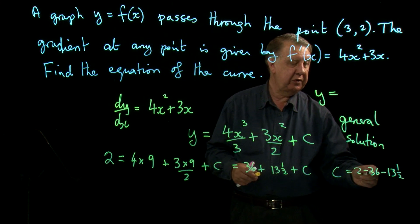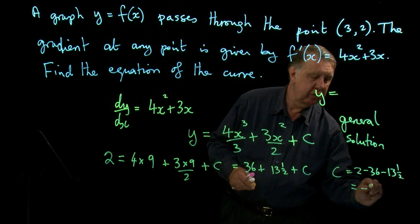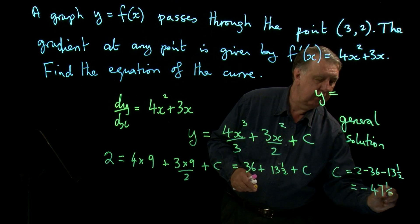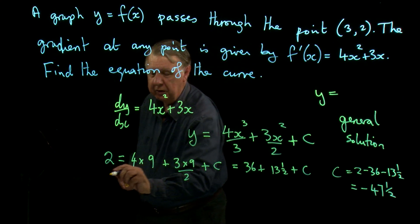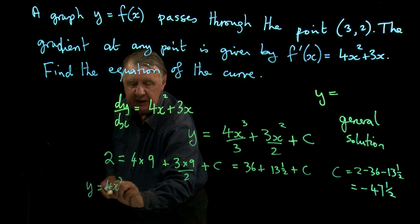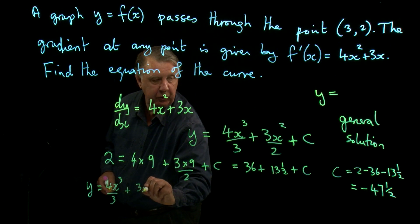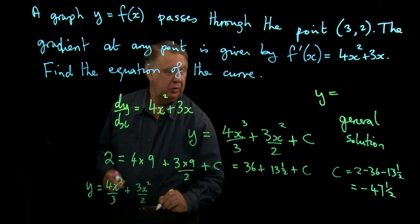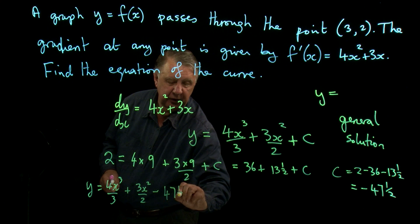So 2 take away 49 and a half is minus 47 and a half. So my final answer then is y equals 4x³/3 plus 3x²/2 minus 47 and a half.